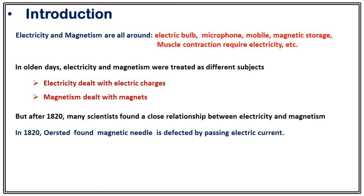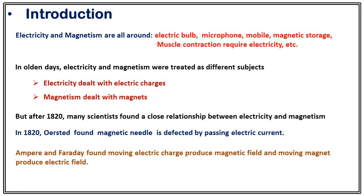Oersted found that a magnetic needle is deflected by a passing electric current. Suppose you have a magnetic compass and you put it near a passing electric current — you will find a deflection in the magnetic needle. This means electric current is affecting the magnetic field. Later on, these facts were supported by Ampere and Faraday, who found that moving electric charge produces a magnetic field, and a moving magnet produces an electric field.